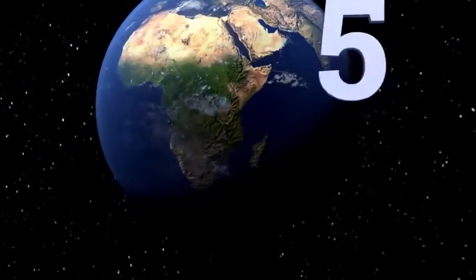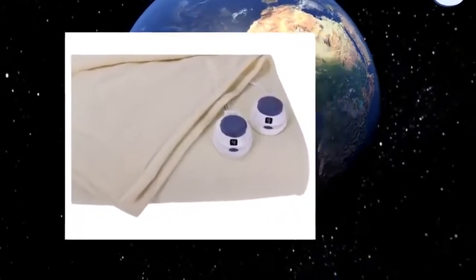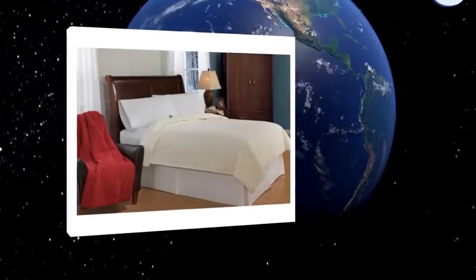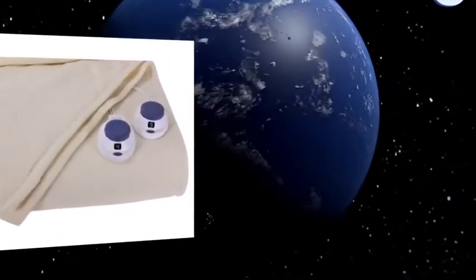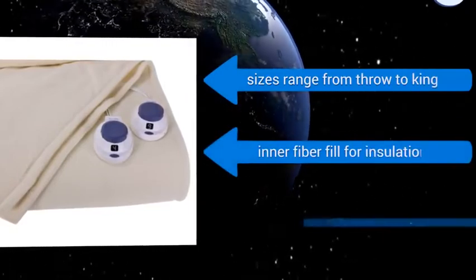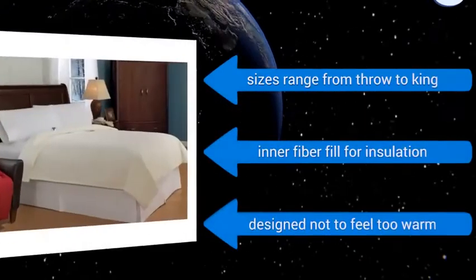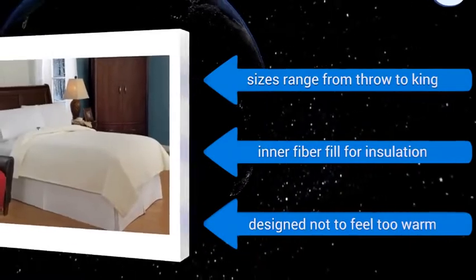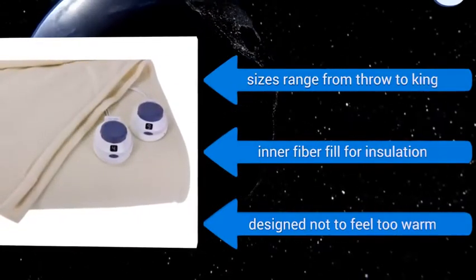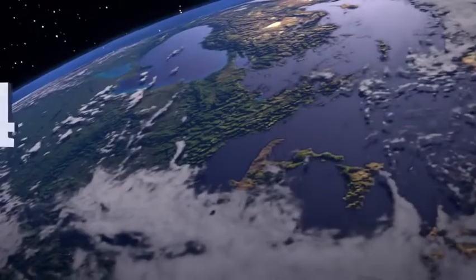Halfway up our list at number five, the Soft Heat Luxury Microfleece is ideal for cold winter areas where the ability to preheat your bed before snuggling down is a must. It also has a built-in over-temperature protection for maximum safety in case you fall asleep while using it. It comes in sizes ranging from throw to king with an inner fiber thinner for insulation. It's designed to never feel too warm.